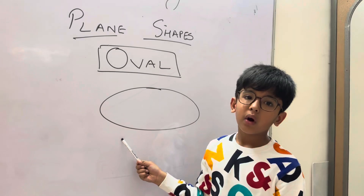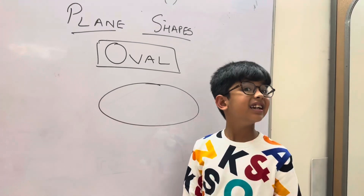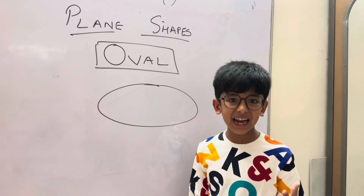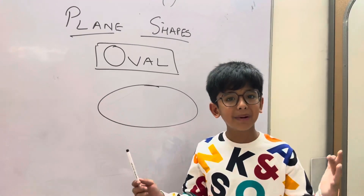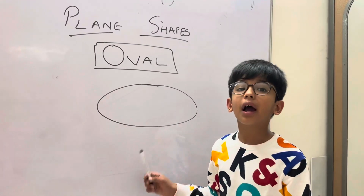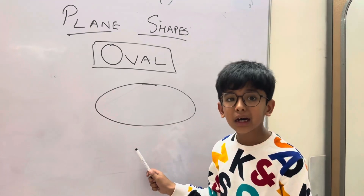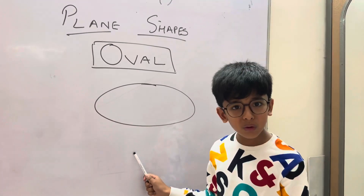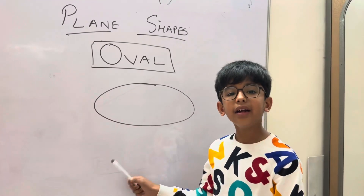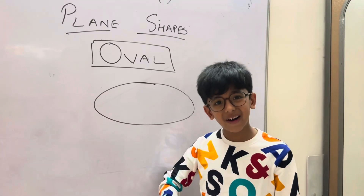An oval has no vertices and no sides. Some examples of oval are carpet, egg, balloon, and rugby ball.